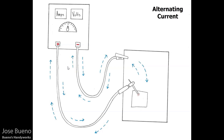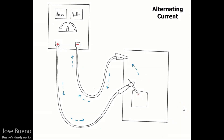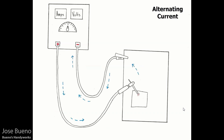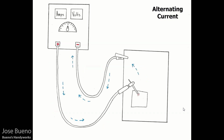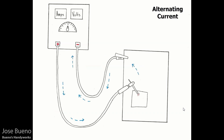This shows current traveling in both directions, though in the static image it looks simultaneous. In the animation, you can see current travels one way, stops, then changes direction. This is slowed to about one or two times per second — in reality, it changes direction 120 times per second, so it happens extremely fast.